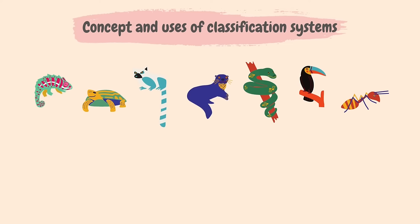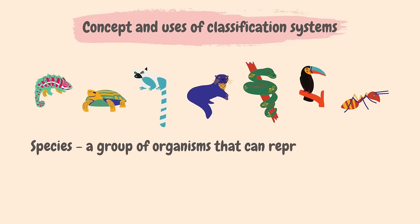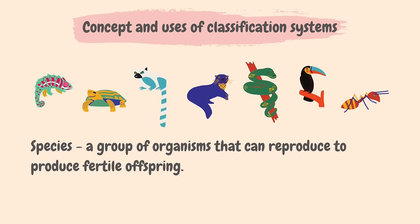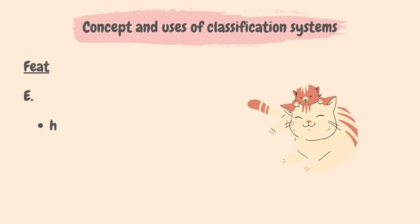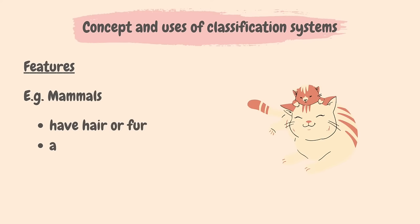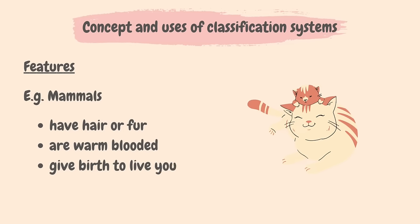Let's move on to the concept and uses of classification systems. There are millions of species of organisms on earth. A species is described as a group of organisms that can reproduce to produce fertile offspring. These species can be classified into groups by the features that they share. For example, generally all mammals have hair or fur, are warm-blooded and give birth to live young.